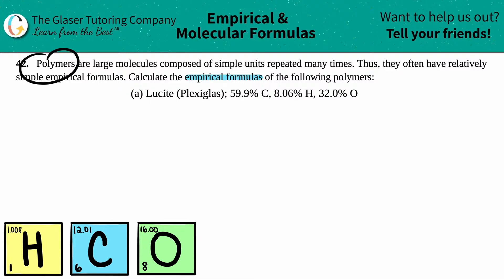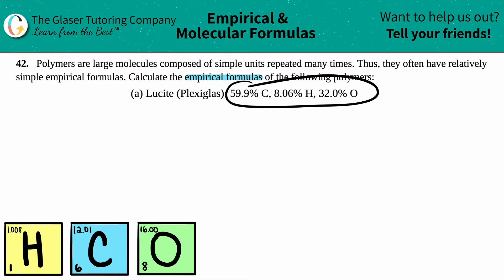Those are just huge pieces of synthetic glass, but it's a polymer. It's just one single unit repeated millions, thousands, maybe even billions of times. Let's find out what that small unit is. They gave us percents and we just have to find the empirical formula. On the playlist already, we've done tons of problems finding empirical formulas.